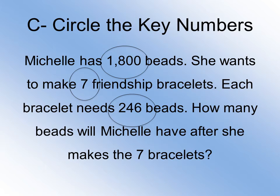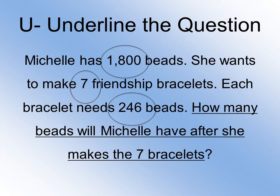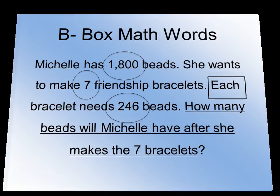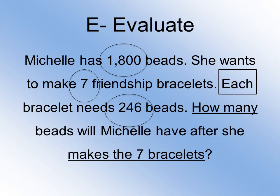We already circled the 7 for the 7 bracelets once, so we're not going to circle it a second time. The question is asking: how many beads will Michelle have after she makes the 7 bracelets? Our math word in this problem is "each." The word "each" tells me that every single bracelet Michelle makes uses 246 beads. For evaluate — what steps do I need to take? I know she has a total of 1,800 beads, she needs to make 7 bracelets, and each bracelet needs 246 beads. So I know I'm going to have to do more than one step to figure out this problem.